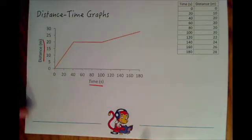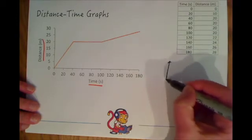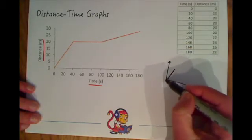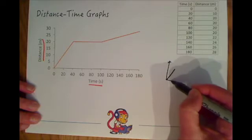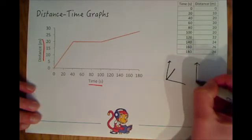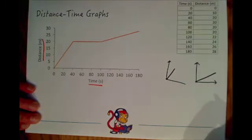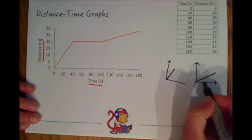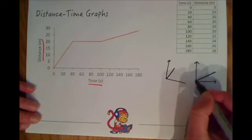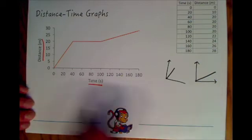For example a really steep slope on the graph would show that something is moving really quickly. It's covering loads of distance on the y-axis over a short amount of time. Compare that with a shallower line which would show something going a little bit slower where you're taking a long time to go only a short distance. So the steepness of the line tells you how fast it's going.